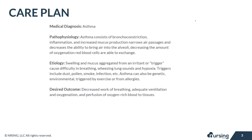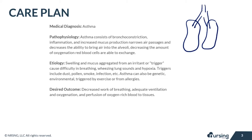Asthma consists of bronchoconstriction — we're going to draw our lungs here. So we have our bronchioles. Bronchoconstriction, inflammation, and increased mucus production narrows the passageways for air to get through, and decreases the ability to bring air into the alveoli, which decreases the amount of oxygenation that the red blood cells are able to exchange.